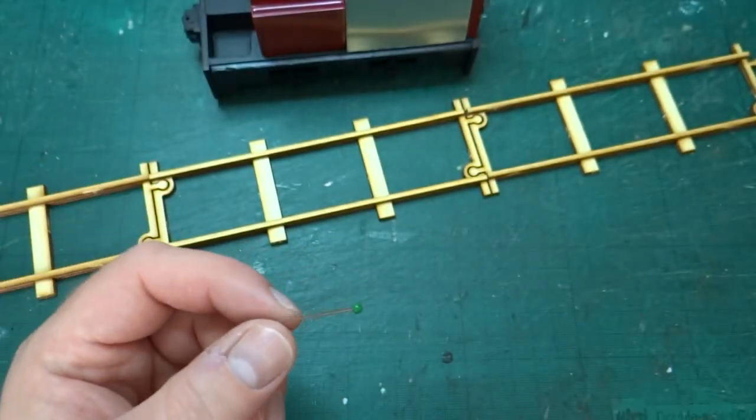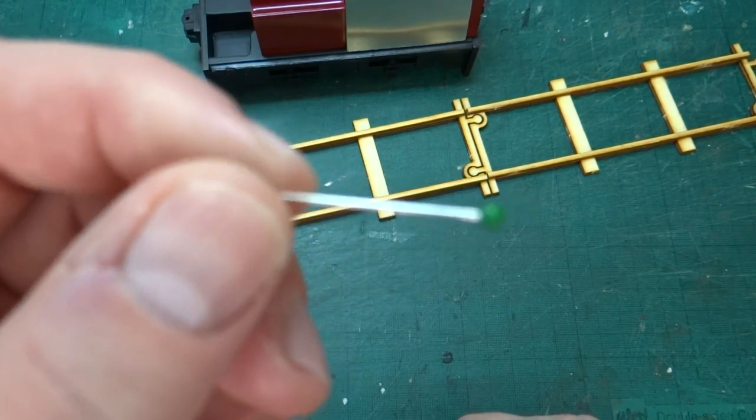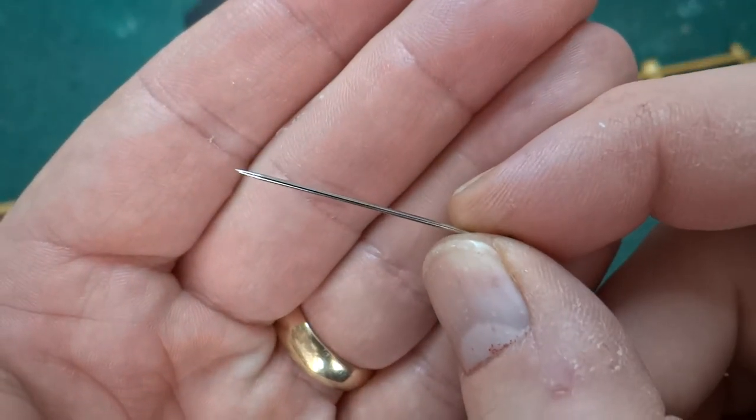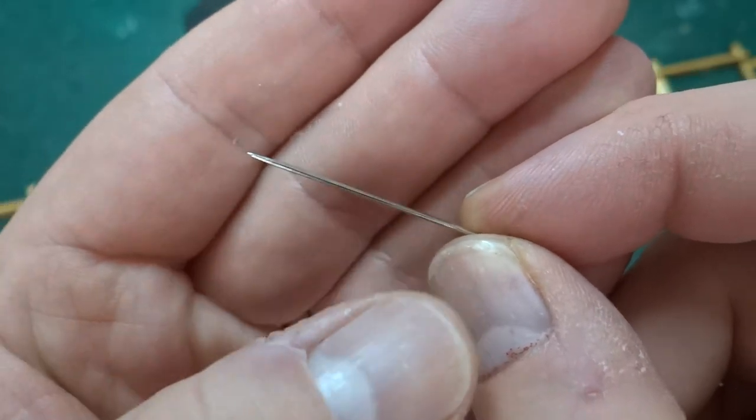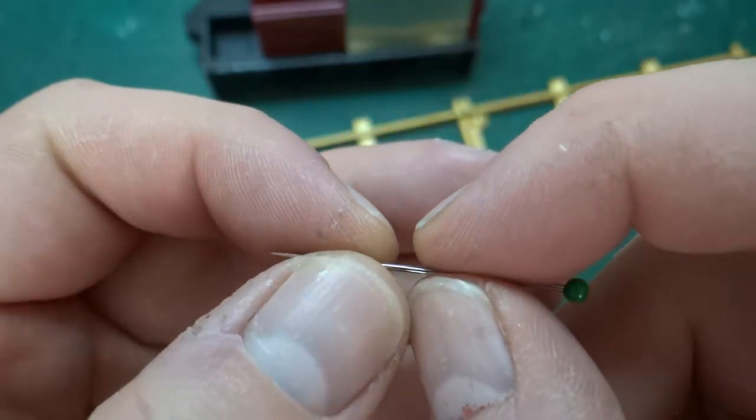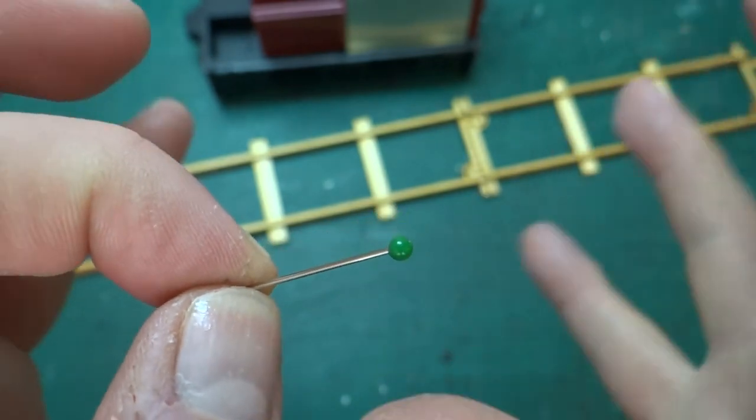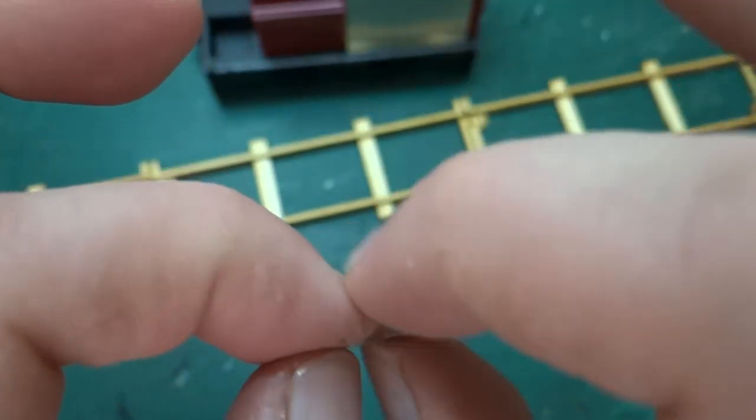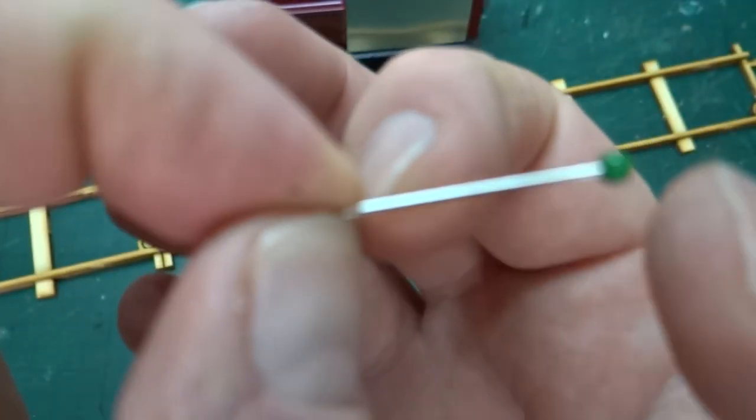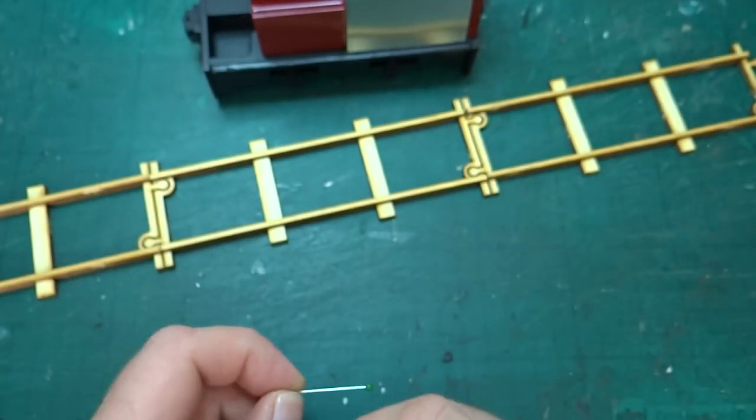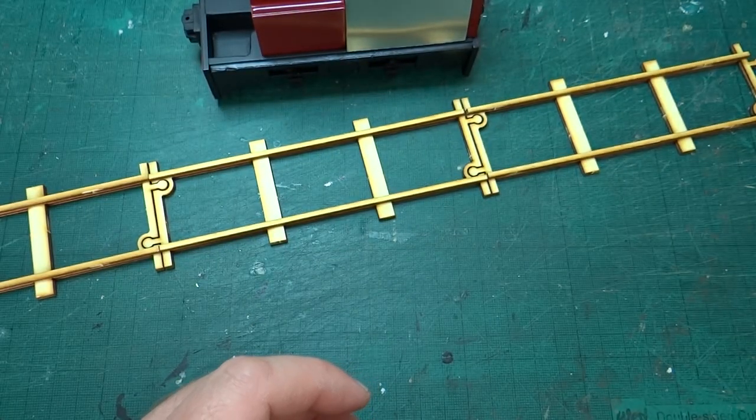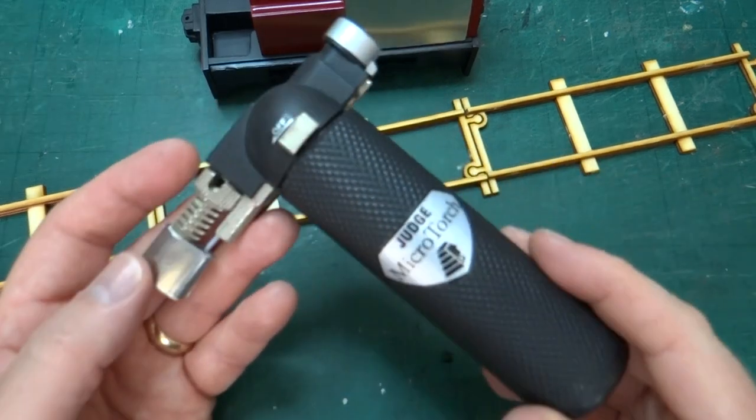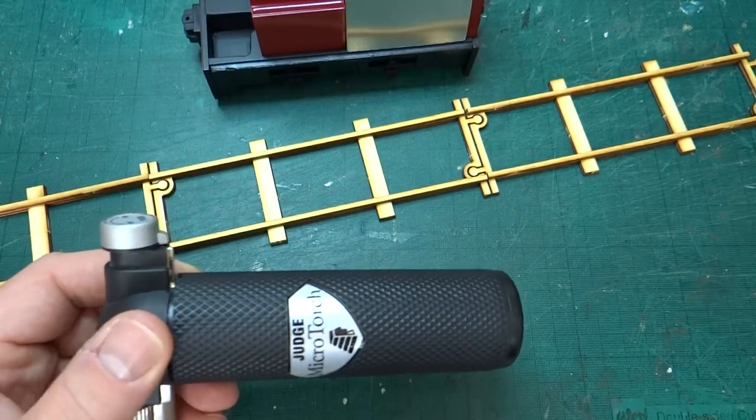Bending was more of an issue. I broke a whole bunch trying to bend them because as soon as I tried to bend them they would just snap, not necessarily where you were bending but sometimes the ball would just shatter on the end. Even if you were bending it right down here, the ball on the end would just shatter off.